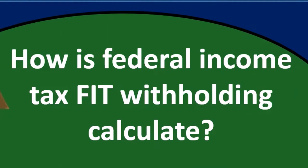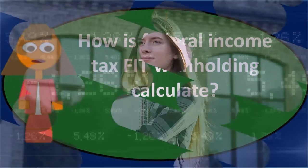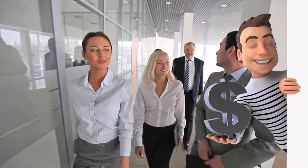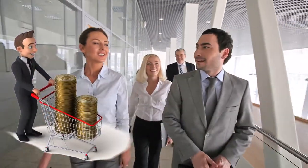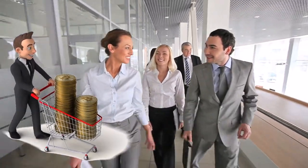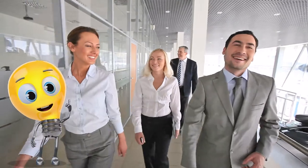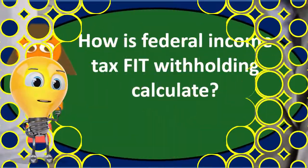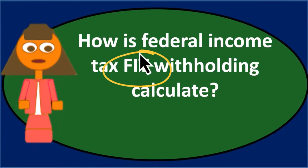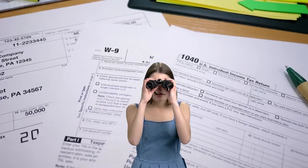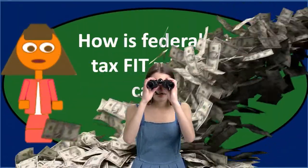The IRS provides the Circular E, which contains tables to help figure this out. To use these tables we need the employee's marital status, the number of allowances, and the pay period — whether it's weekly, bi-weekly, semi-monthly, or monthly. The FIT withheld will be reported on the employee's W-2, which they then report on their Form 1040 at year end.